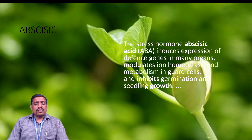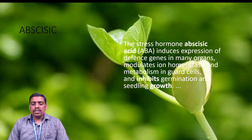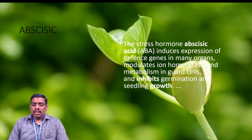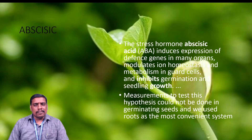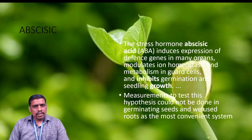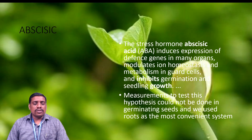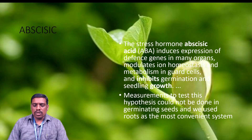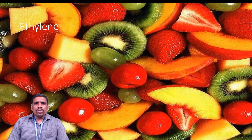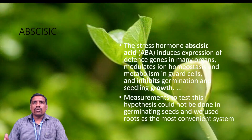Abscisic acid modulates ions and homeostasis and metabolism in guard cells, and inhibits germination of seeds and seedling growth and development. There are some measurements to test the hypothesis regarding the functions of abscisic acid and its effects on plants. Such measurements could not be done in germinating seeds, but roots are used as the most convenient system. So roots and their growth completely depend upon the plant hormone abscisic acid.